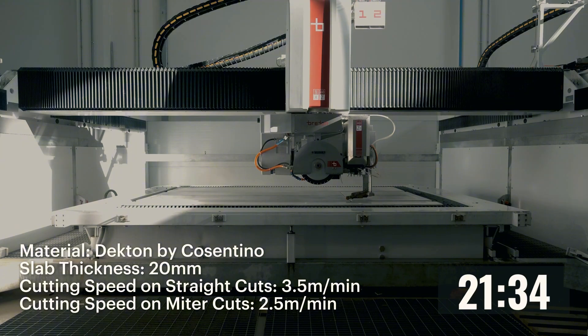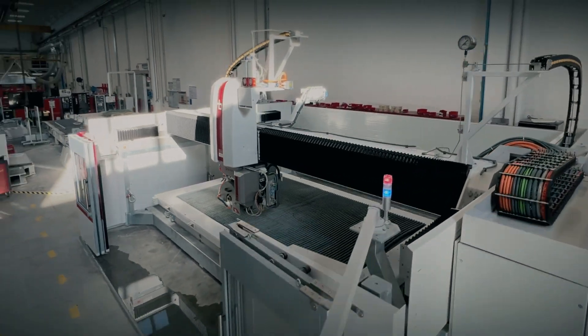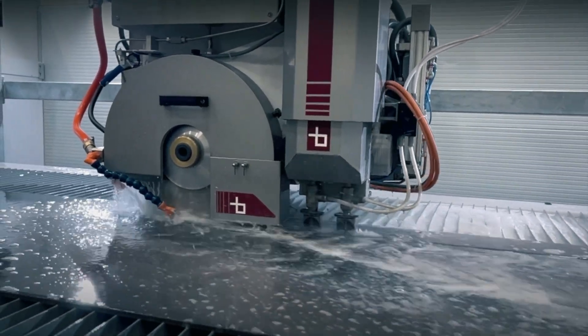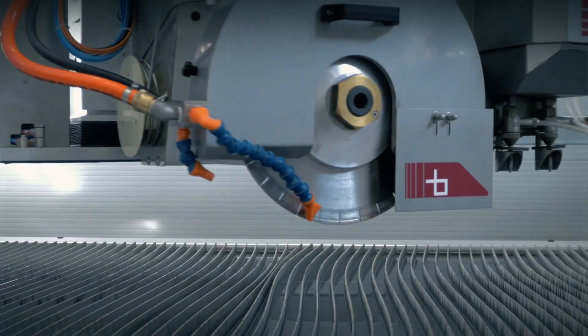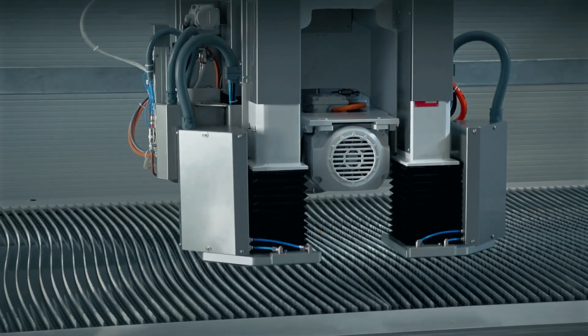A detail that many may have noticed and deserves attention is that Breton Trinity is the only jet saw that does not require expendable elements between the slab and the blades. The slab can be placed directly on steel slats bench, offering significant savings on consumables.